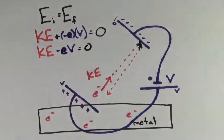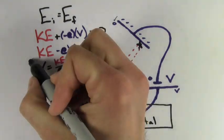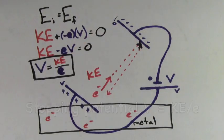So if we solve for the stopping potential, we get that the stopping potential equals the kinetic energy of the electron divided by the magnitude of the charge on the electron.